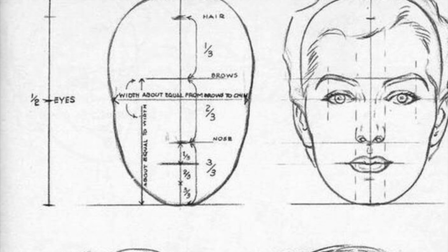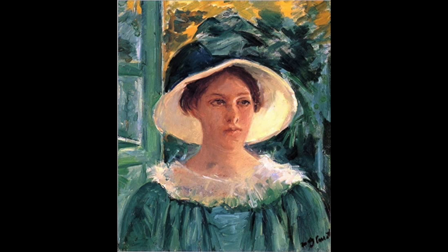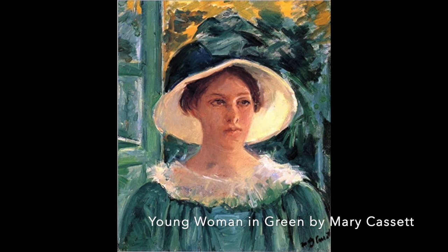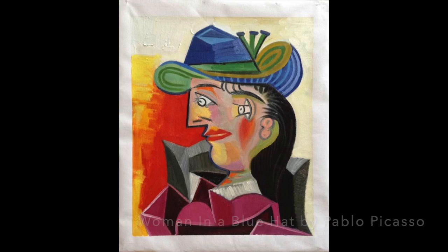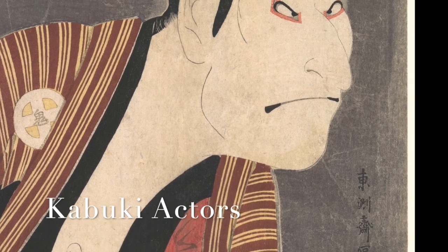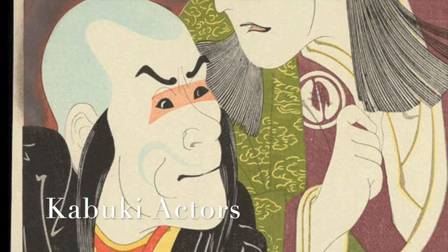Next, have students explore the proportional relationships within the face in famous masterpieces. For example, students can compare the face drawn by Mary Stevenson Cassatt in Young Woman in Green with Pablo Picasso's Cubist painting Woman in a Blue Hat. Students can also explore the caricature-like ways Kabuki actors are portrayed in woodblock prints.